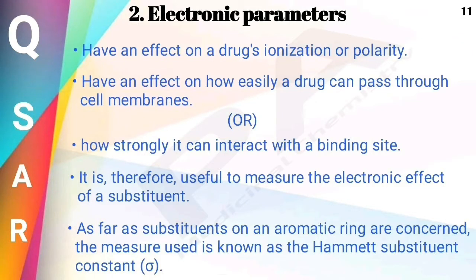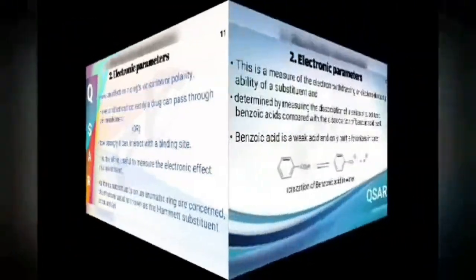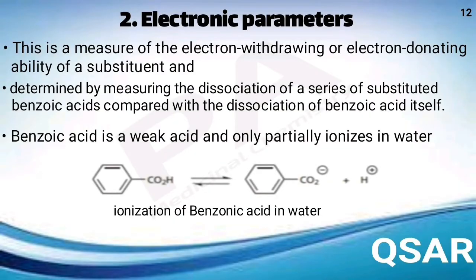Regarding the substituents in the aromatic ring, this measure is called the Hammett substituent constant. The Hammett substituent constant is a measure of the electron-withdrawing or electron-donating ability of the substituent, and it can be determined by measuring the dissociation of a series of substituted benzoic acids compared with the dissociation of benzoic acid itself.